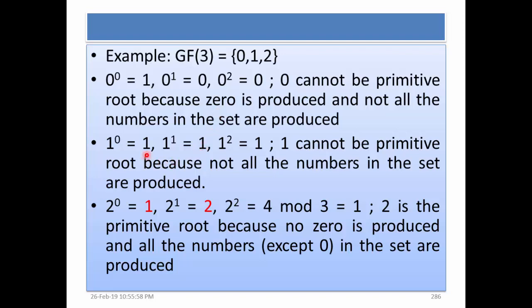Similarly, if you test 1, then you get 1 raised to power 0 is equal to 1, 1 raised to power 1 is equal to 1, and 1 raised to power 2 is equal to 1. So 1 cannot be a primitive root because not all the numbers in the set are produced. Now look at 2: 2 to the power 0 is 1, 2 to the power 1 is 2, and 2 to the power 2 is 4 which mod 3 equals 1. So 2 is the primitive root because no 0 is produced and all numbers except 0 in the set are produced.